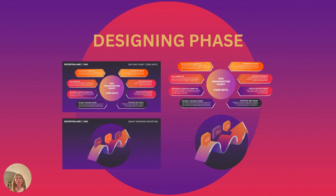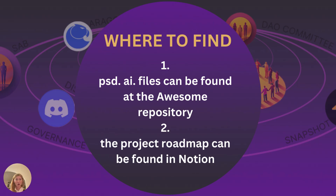Every single illustration was created in two variations: one on a solid background and one on a transparent background. This helps use the illustration by itself or as part of other educational or informational projects. All files are saved in two different ways: the PSD and AI files will be found in the LSM repository, and the project roadmap with information about every single illustration can be found in Notion. All files are obviously ready to be changed and transformed based on future needs.